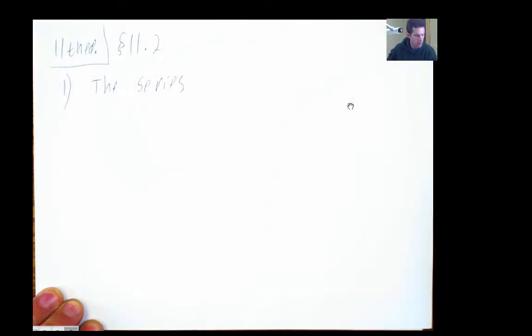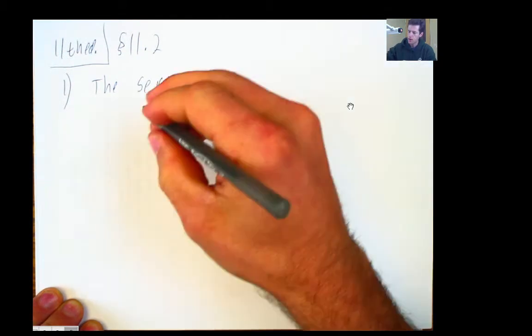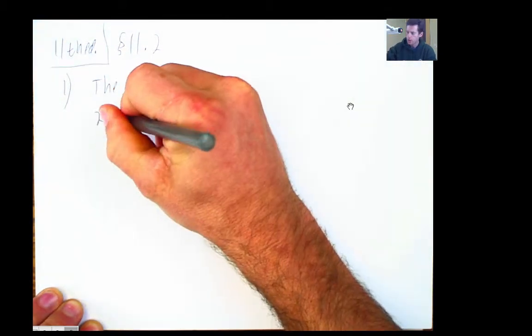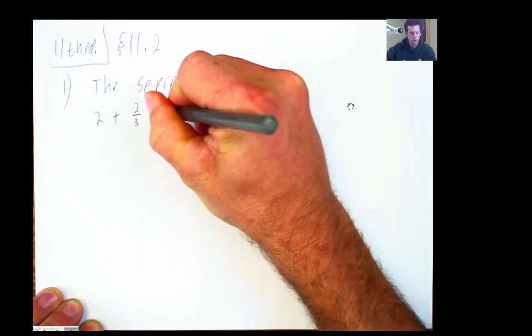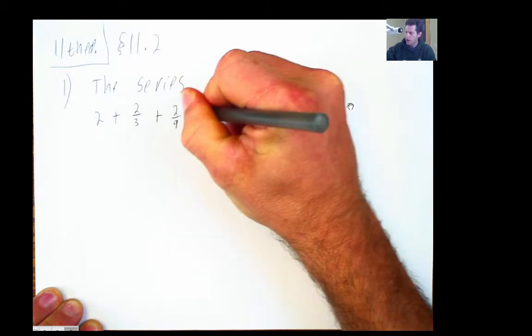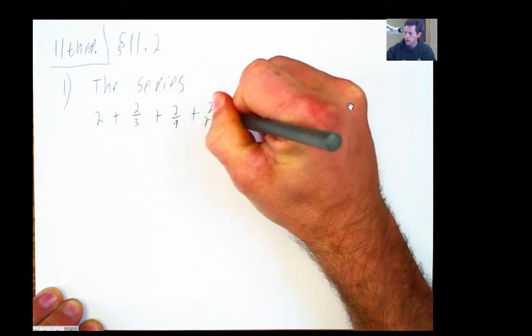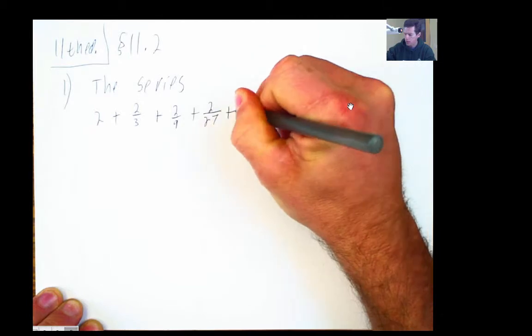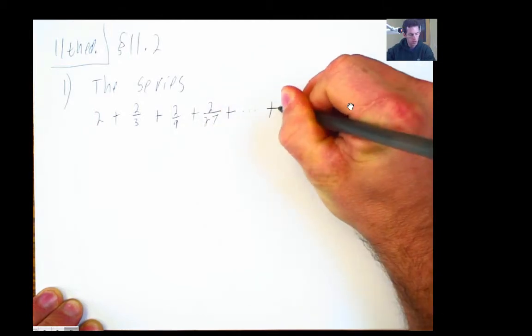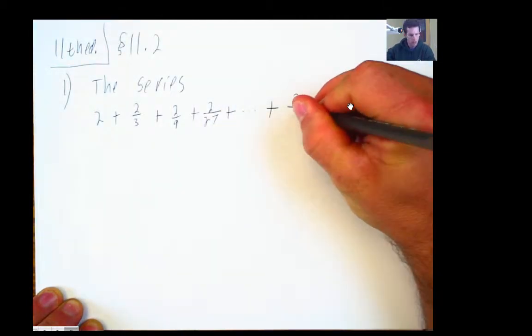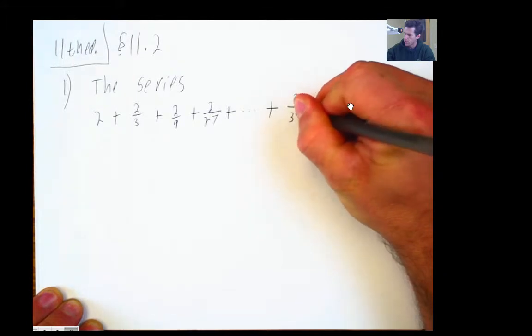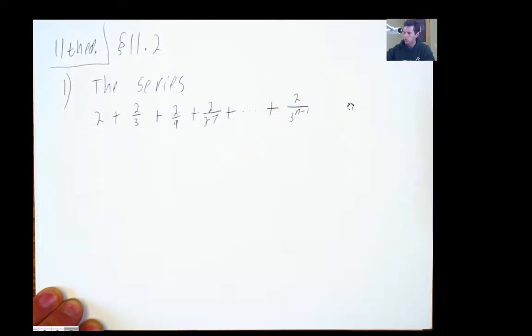I'm going to have to look at the series. 2 plus 2/3 plus 2/9 plus 2/27 plus some other terms. It looks like they give us a description of the nth term. It's 2 over 3 to the n minus 1.